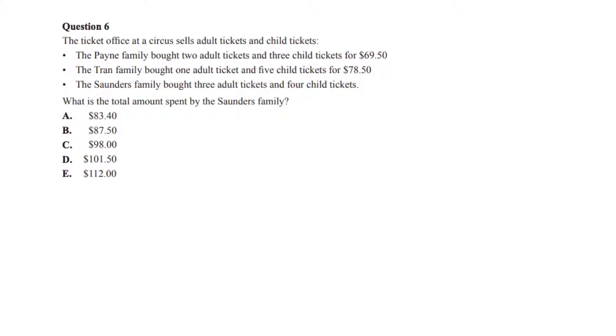Question 6. The ticket office at the circus sells adult tickets and child tickets. The Payne family bought 2 adult tickets and 3 child tickets for $69.50. Let A be the cost of an adult ticket and C be the cost of a child ticket. So, we can write an equation 2A plus 3C equals 69.50.